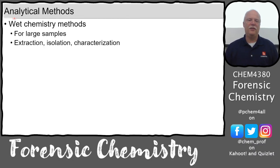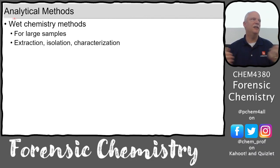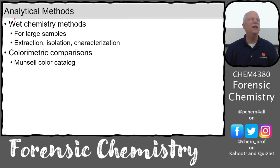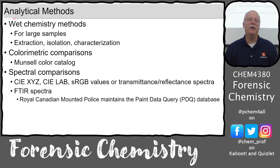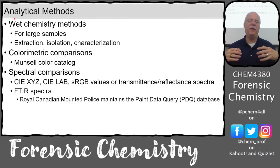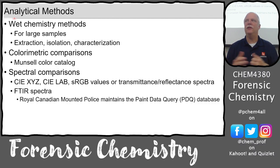We've talked about other analytical methods: wet chemistry methods, extraction, isolation, and so on. We've talked about colorimetric comparisons, quantifying color with the Munsell catalog where you have letter designations like RP for red-purple. We've done spectral analysis where we quantified XYZ and RGB values. And you have some experience from PCHEM using FTIR. Looking at paints, we looked at the CIE tristimulus values.